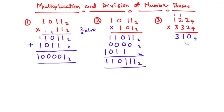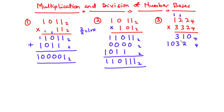3 times 2 is 6. 6 divided by 4 is 1 remainder 2. So we have 2 here and carry on 1. 3 times 2 is 6, plus 1 is 7. So that's going to be 1 remainder 3. We have 3 and carry on 1. 3 times 1 is 3, plus 1 is 4. 4 divided by 4 is 1 remainder 0. So we have 0 and carry on the 1. So we have 1, 0, 3, 2.